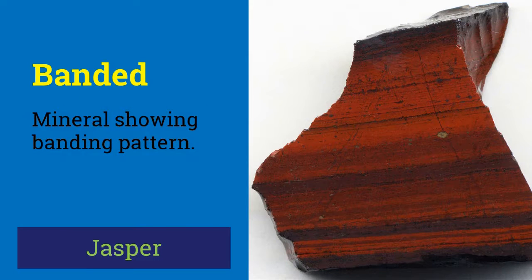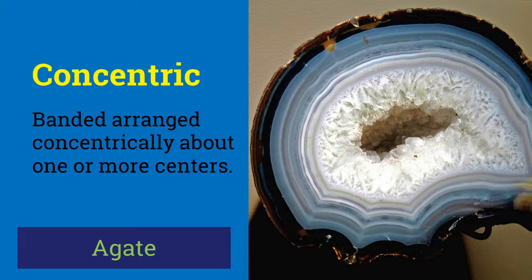A mineral aggregate in which a single mineral may show thin and roughly parallel banding, as in banded malachite, is said to have banded habit. Also, when two or more minerals form a finely banded intergrowth, as in hematite bands in banded iron formation, it is also called banded habit. Concentric habit is that in which bands or layers are arranged concentrically about one or more centers. Agates have this habit.